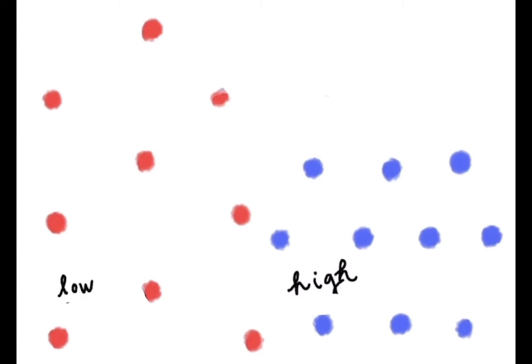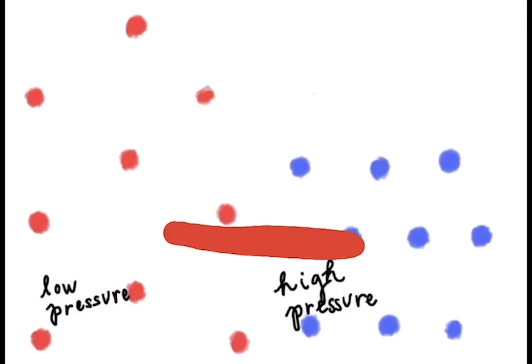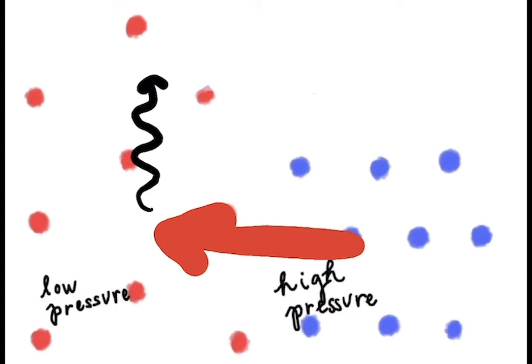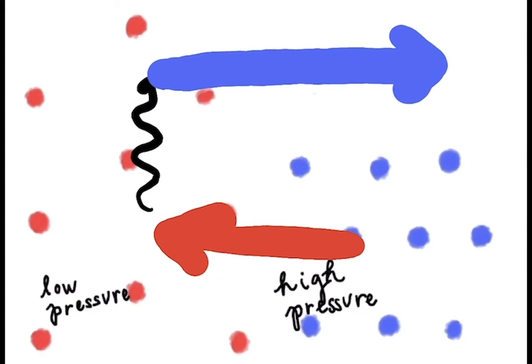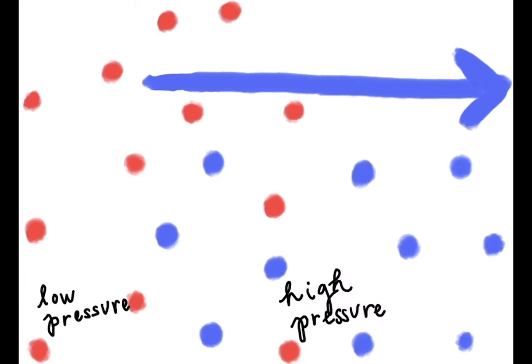Hot air is less dense than cold air. When cold air is near hot air, the molecules in the cool air search for more room and the cold flows towards the hot. This pushes the lighter hot air up and it flows towards the cool side where it sinks and starts to cycle all over again.